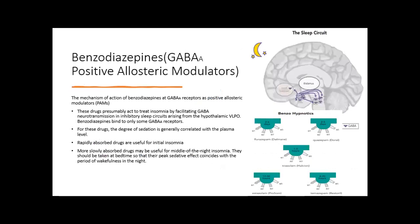Benzodiazepines as positive GABA-A allosteric modulators. The mechanism of action of benzodiazepines at GABA-A receptors is as positive allosteric modulators. These drugs presumably treat insomnia by facilitating GABA neurotransmission in inhibitory sleep circuits arising from the hypothalamic VLPO. Benzodiazepines bind to only some GABA-A receptors and the degree of sedation is generally correlated with plasma level. Rapidly absorbed drugs are useful for initial insomnia; more slowly absorbed drugs may be useful for middle-of-the-night insomnia and should be taken at bedtime so their peak sedative effect coincides with the period of wakefulness in the night.